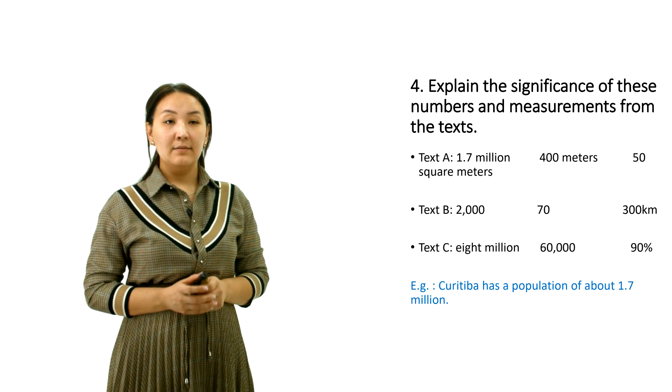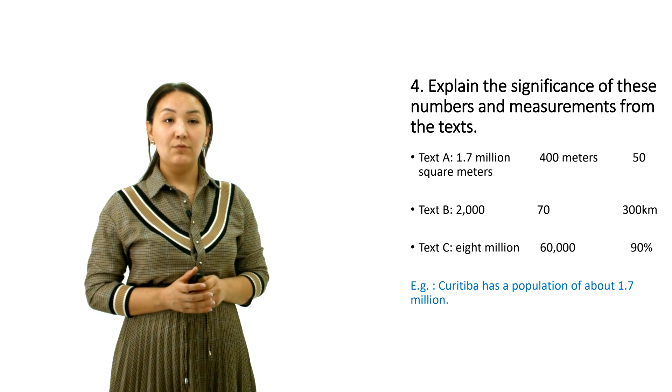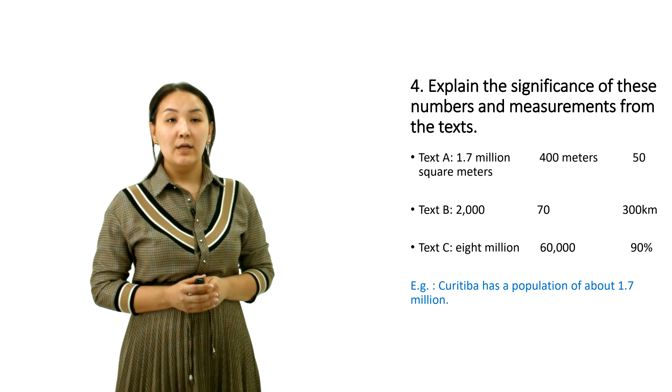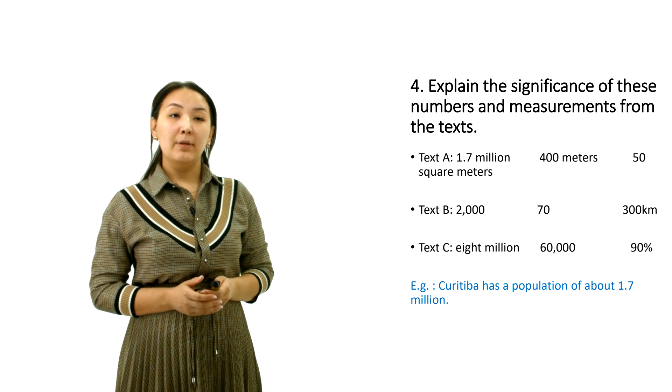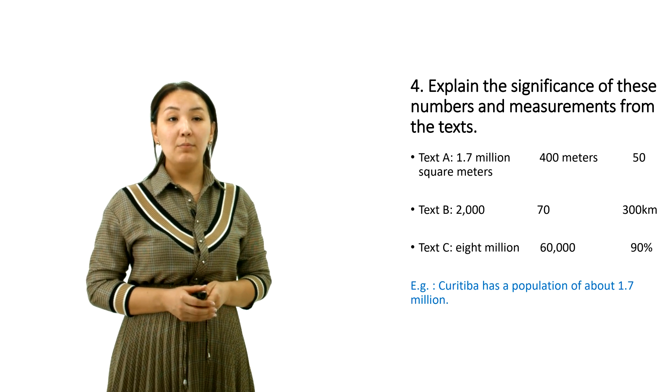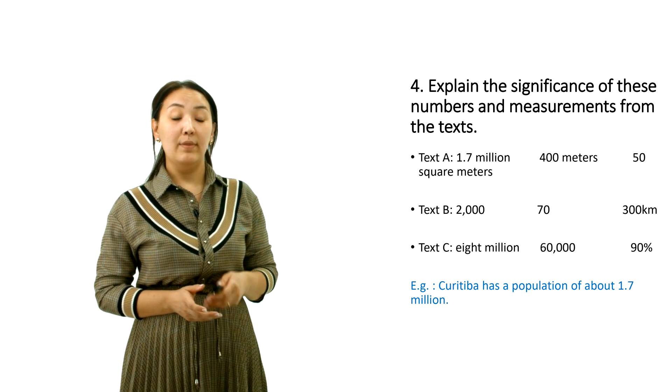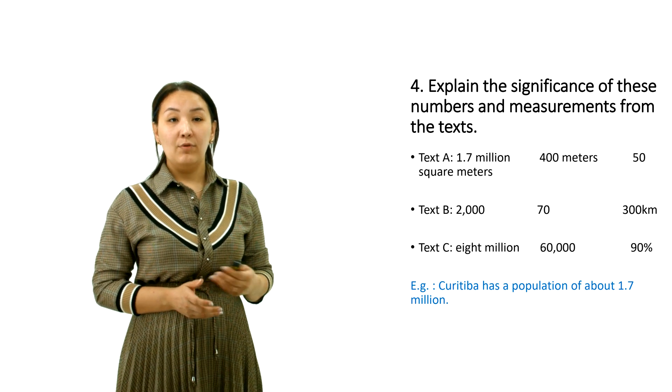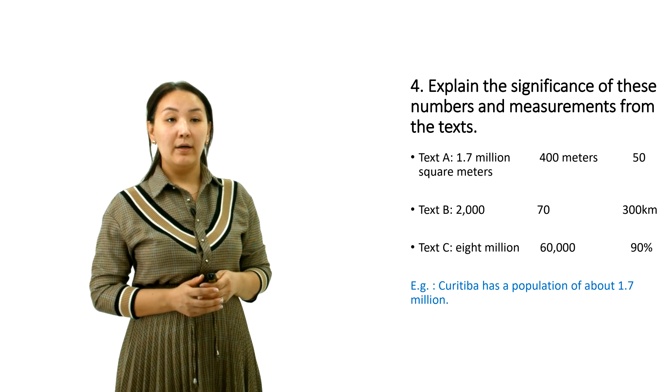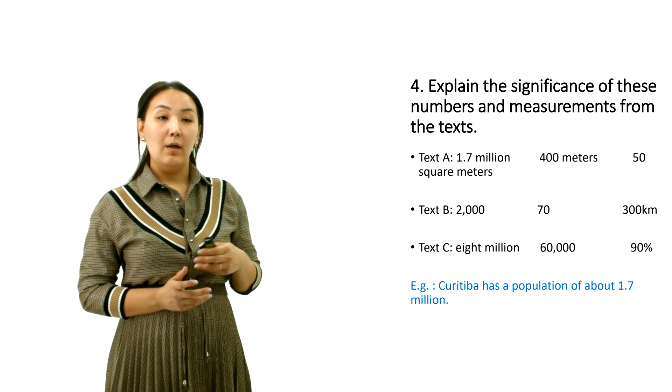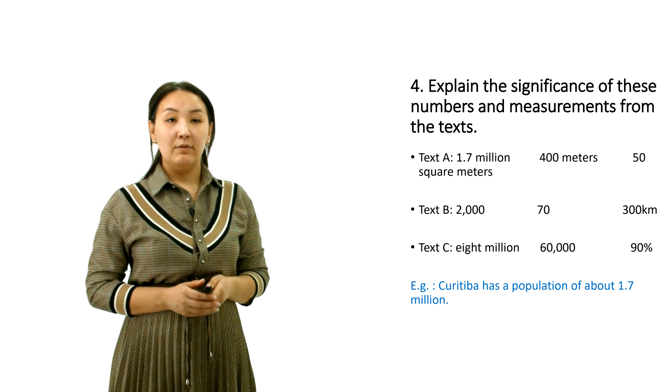The next is exercise 4. In this exercise you are going to explain the significance of these numbers and measurements from the texts. For example, Karichiba has a population of about 1.7 million.